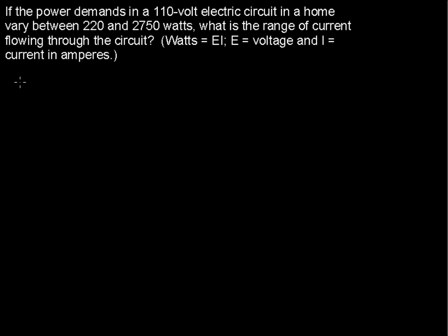If the power demands in a 110-volt electric circuit in a home vary between 220 and 2750 watts, what is the range of current flowing through the circuit? It gives us a formula here that watts equals the voltage E multiplied by the current I.